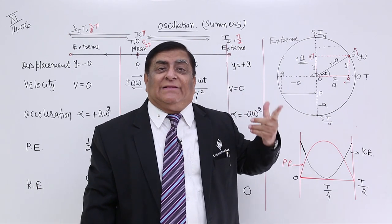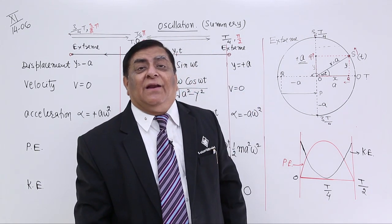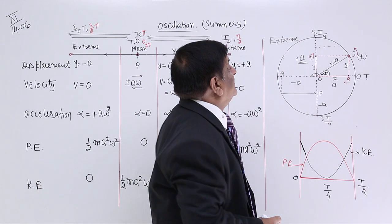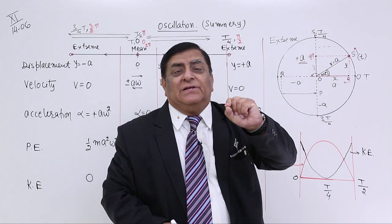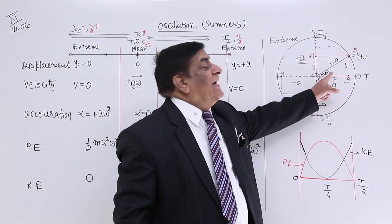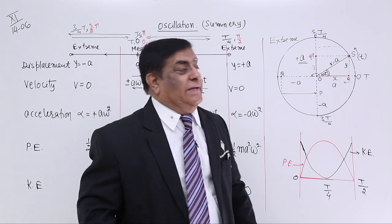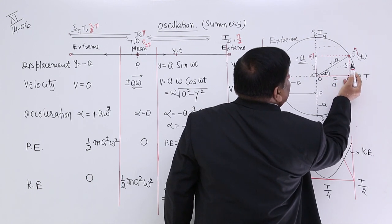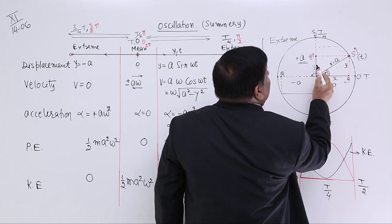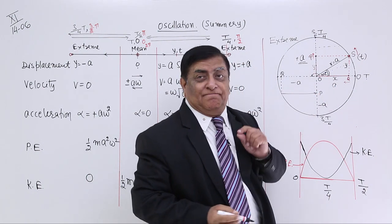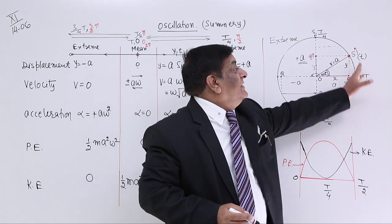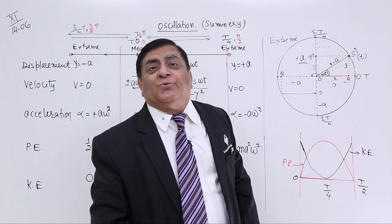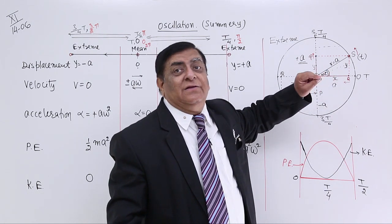So we need another method to describe its position — to give its address — and that method is by quoting an angle. If I tell you that point P in oscillation is at such a position where this angle is 30 degrees, you draw the angle, drop a perpendicular, and find the position. You also know it is moving upward. This angle we call phase.